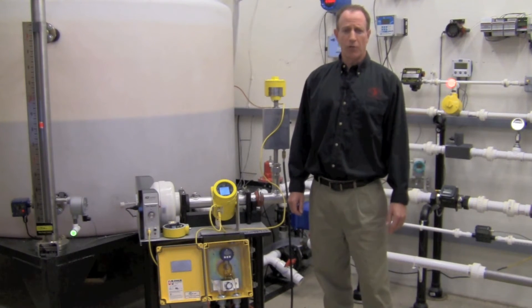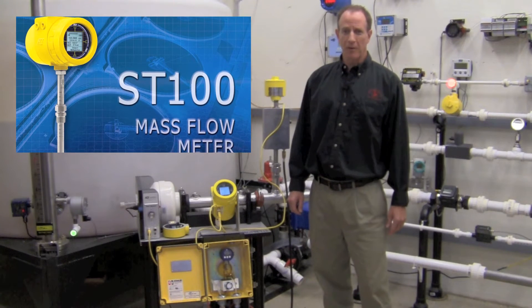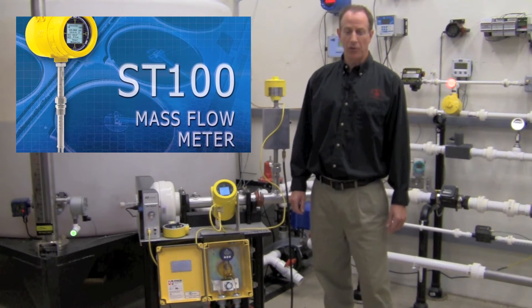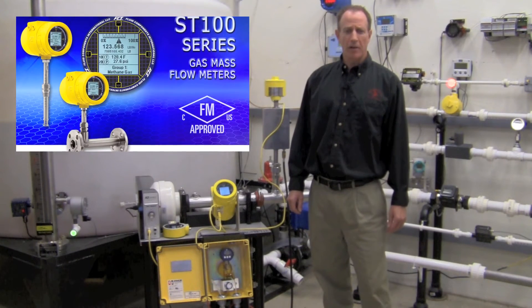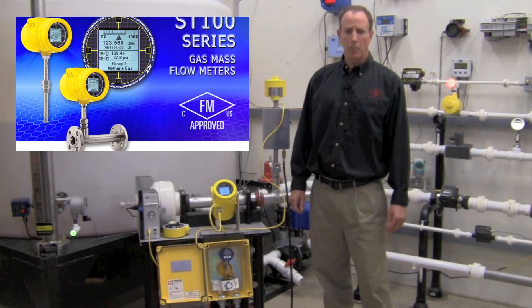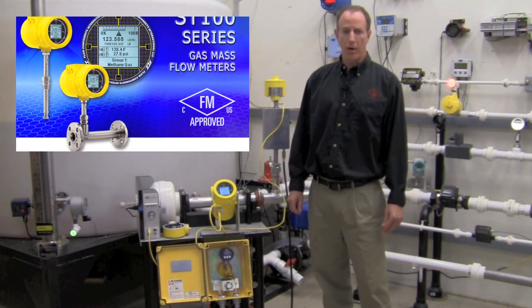There are several versions of the ST100 series flow meter. The ST100 is an insertion style flow sensor. The ST100L is an inline flow meter for line sizes from 1-inch to 2-inch.